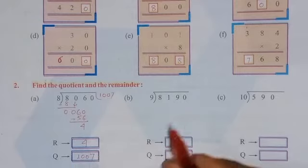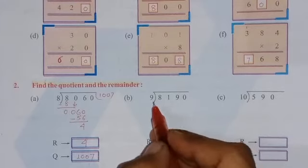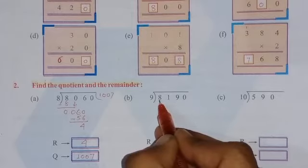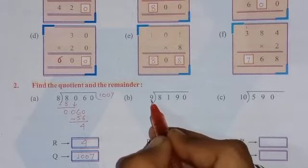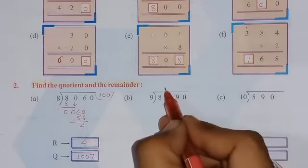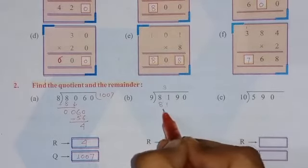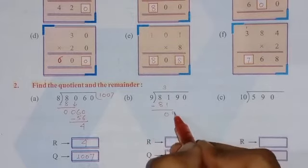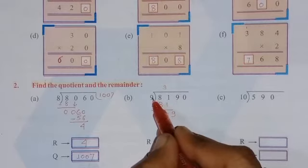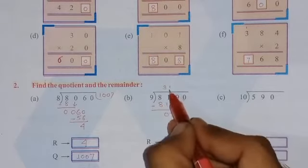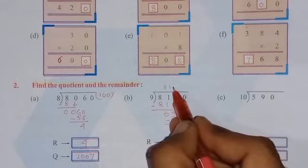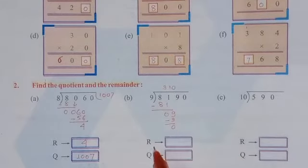See the next division. We have to divide this number by 9. So we will take first 2 digits together because 8 is smaller than 9. So on dividing 81 by 9, 9 9's are 81. On subtracting you will get 0. Now we have to write down 9. To divide 9 one time, you will get 9. Subtract 0. And this 0 will be written here. This is the answer. So remainder is 0 and quotient is 910.